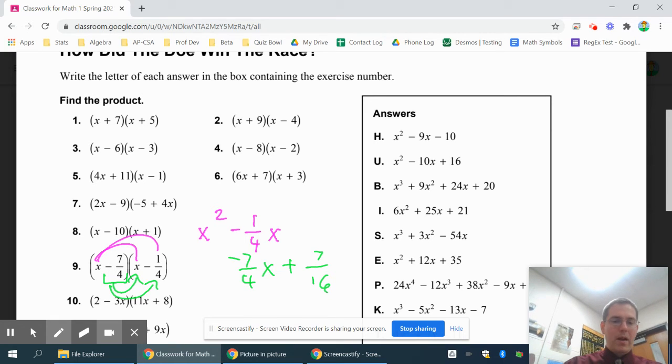Now when I combine my like terms together, what I'm going to end up doing is, the way I wrote this is so that my two like terms are already stacked on top of each other. It makes it very easy to see. I have x squared there. And then I have negative 1 fourth and negative 7 fourths would be negative 8 fourths, which just reduces to negative 2x.